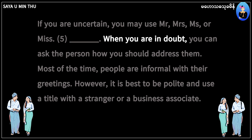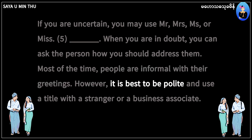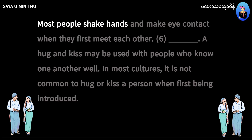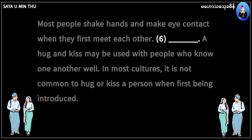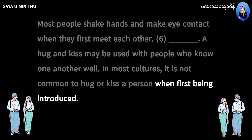When you are in doubt, you can ask the person how you should address them. Most of the time, people are informal with their greetings. However, it is best to be polite and use a title with a stranger or a business associate. Most people shake hands and make eye contact when they first meet each other. A hug and kiss may be used with people who know one another well. In most cultures, it is not common to hug or kiss a person when first being introduced.